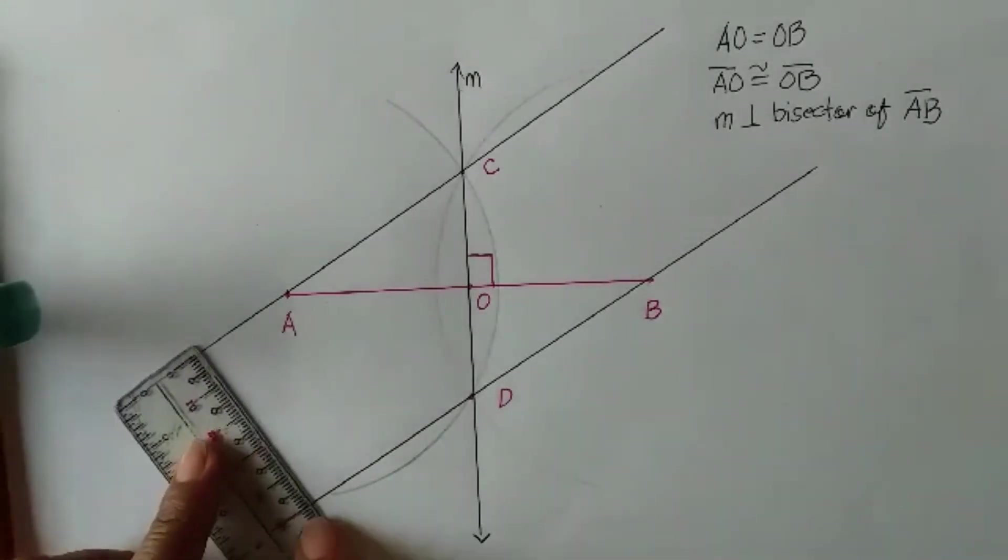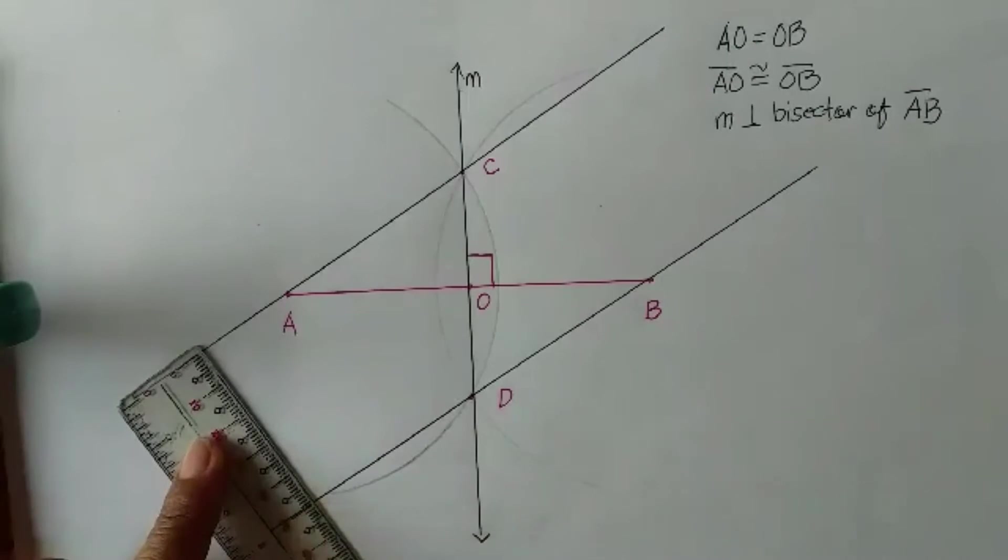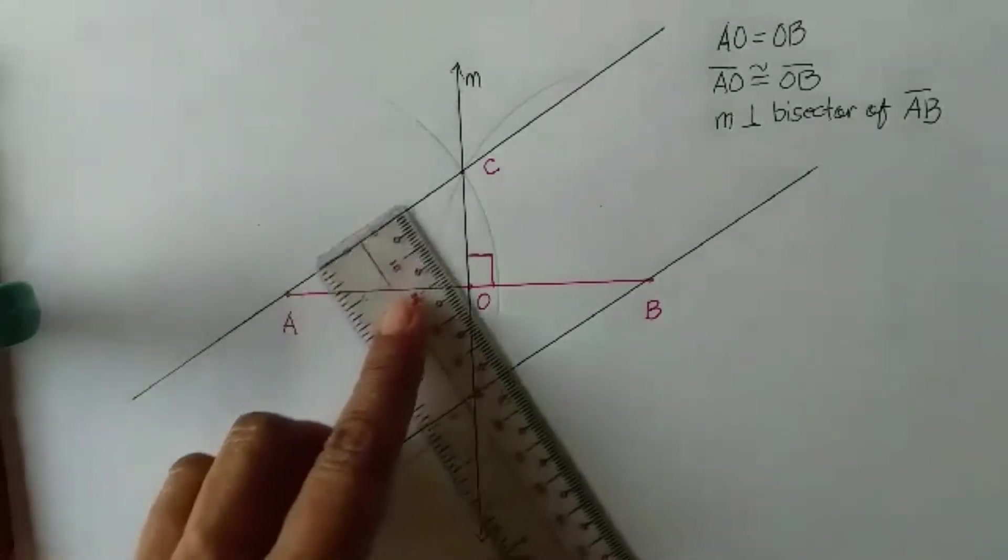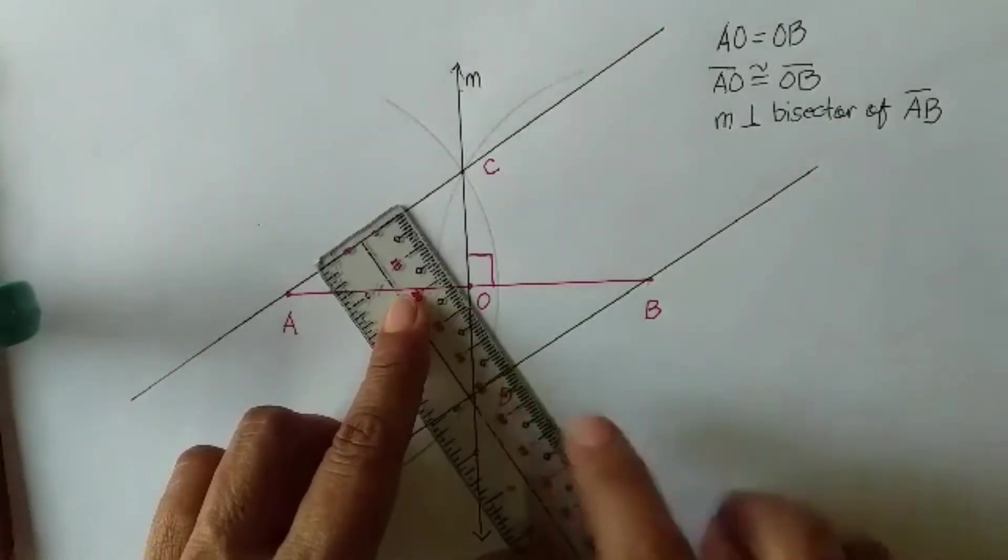We know that when we talk of parallel lines, the two lines must be equidistant. They have the same distance from the start to the end.